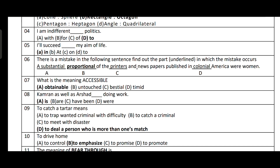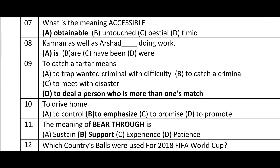Question number six: there is a mistake in the following sentence — find out the underlined part. 'A substantial proportional of the printers and newspapers published in colonial America were women.' The error is 'proportional' — it should be 'proportion'. Option B is correct.